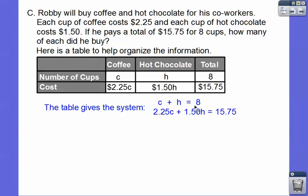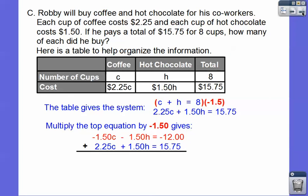We'll take this top equation and multiply it by negative 1.5 or $1.50. When we do that, here it is down here, and then these guys are going to cancel when we add these together. So we get 75 cents C equals 3.75, so when we divide 3.75 by 75, we get 5. C plus H equals 8, so 5 plus H equals 8.